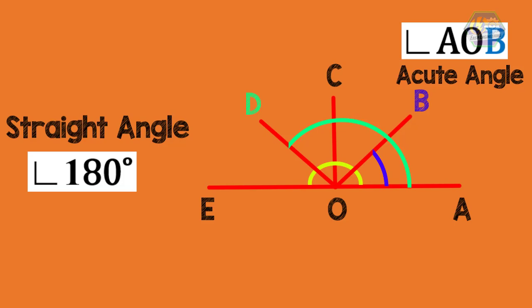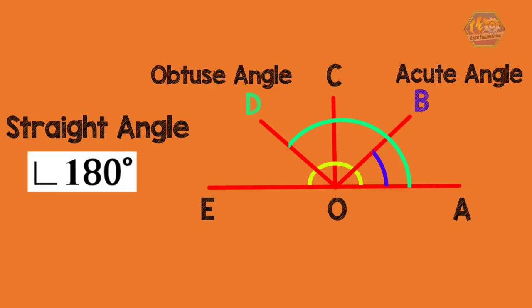And the angles which are more than 90 degrees but less than 180 degrees are called obtuse angle. The angle formed here is an example of obtuse angle.